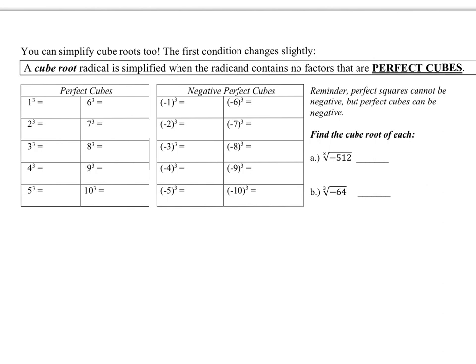So now we're going to start simplifying cube roots instead of square roots. The first condition: for a square root radical to be simplified, the radicand contains no factors that are perfect squares. The same rule applies for cube roots — a cube root radical is simplified when the radicand contains no factors that are perfect cubes. Take a moment, stop the video, and fill out what your perfect cubes are. Notice I threw in some negatives there because negative numbers can also be perfect cubes.